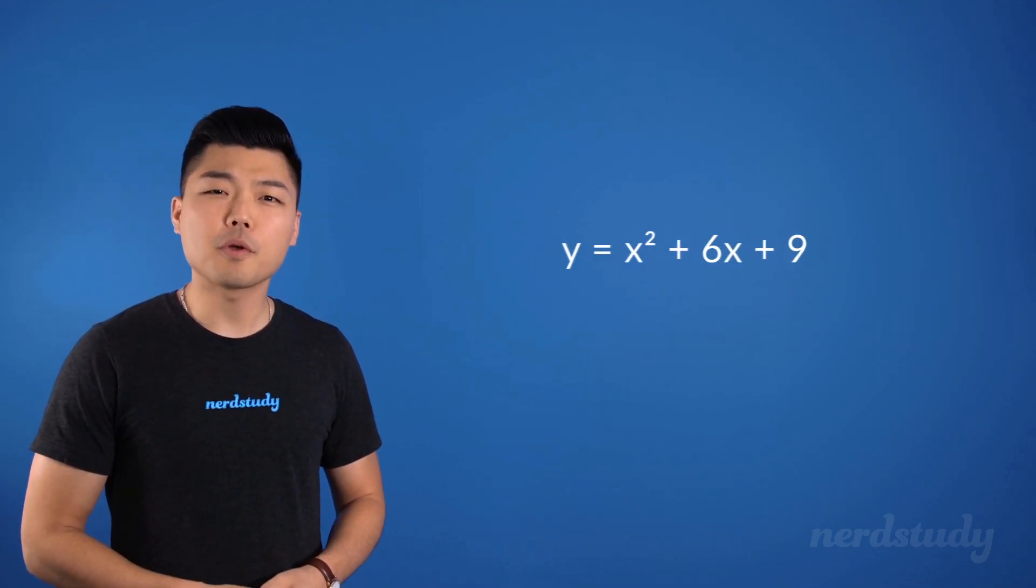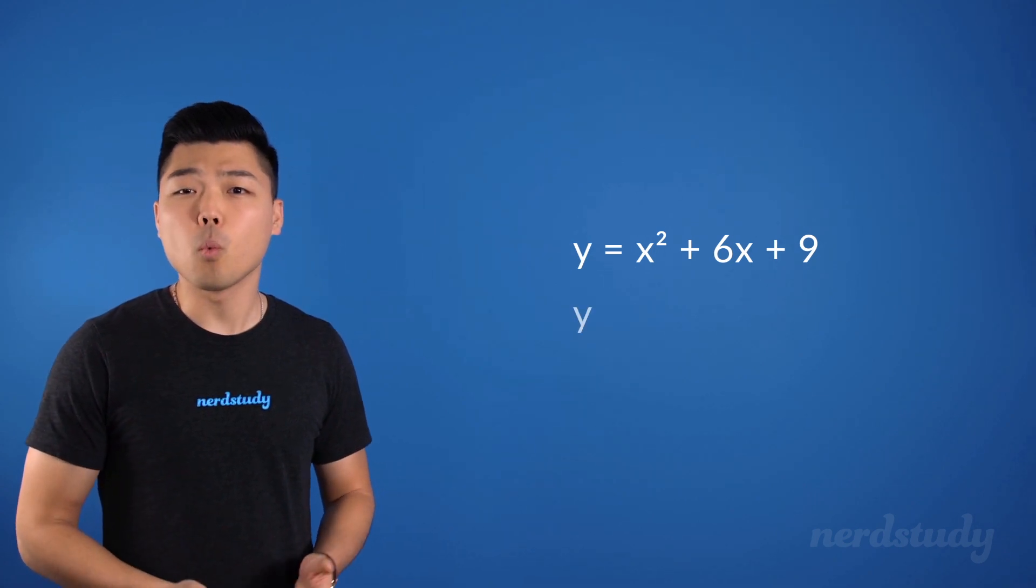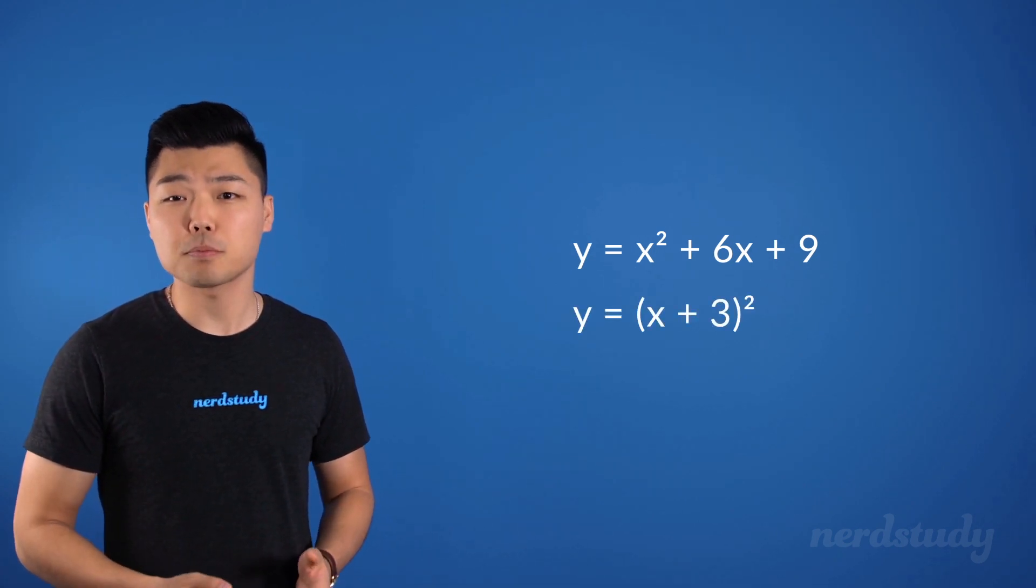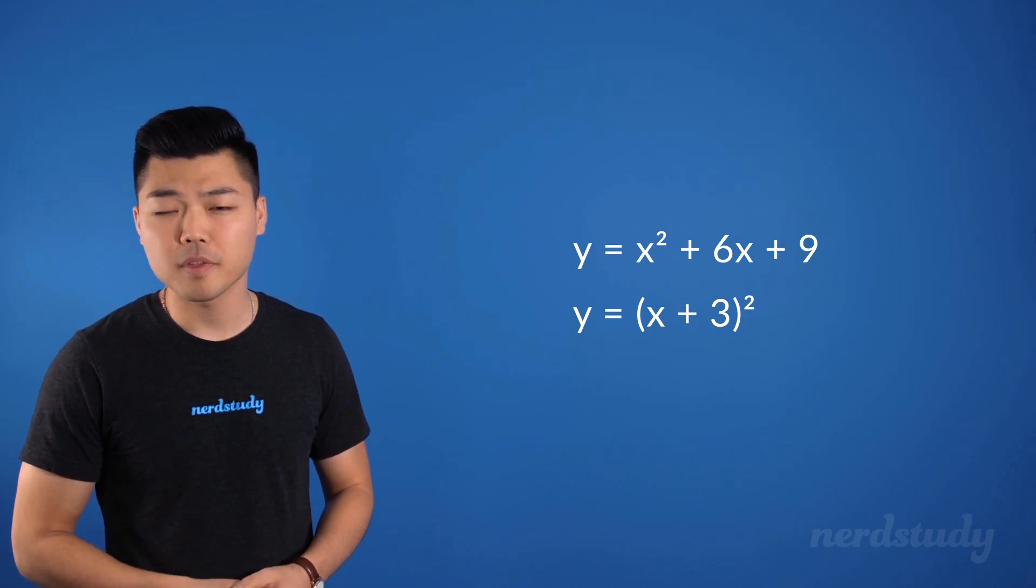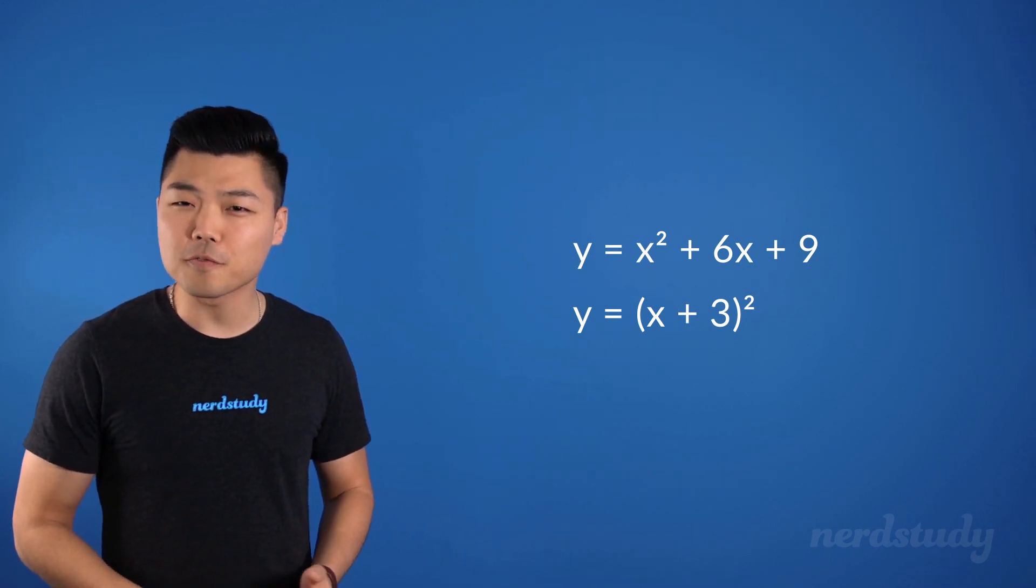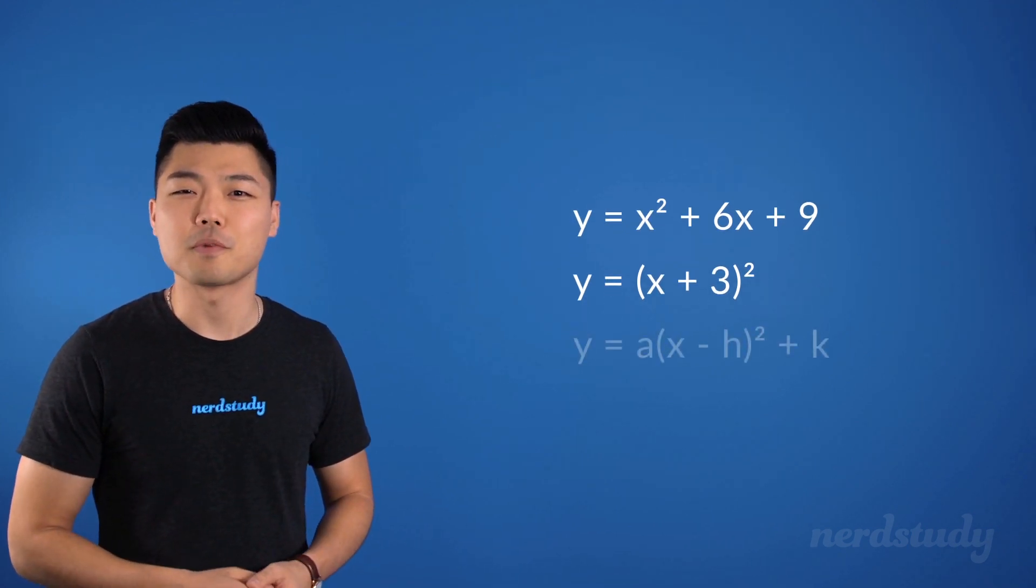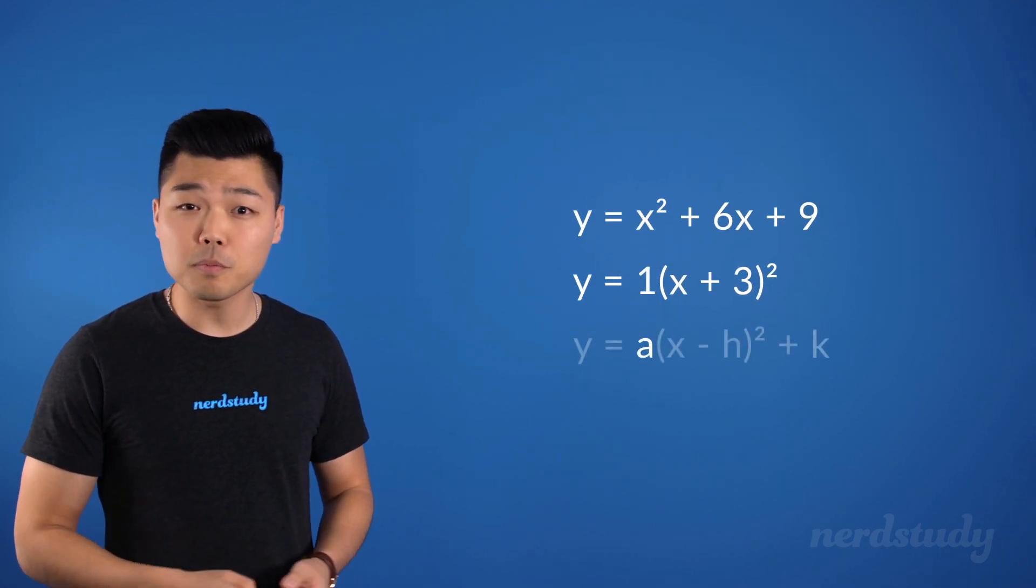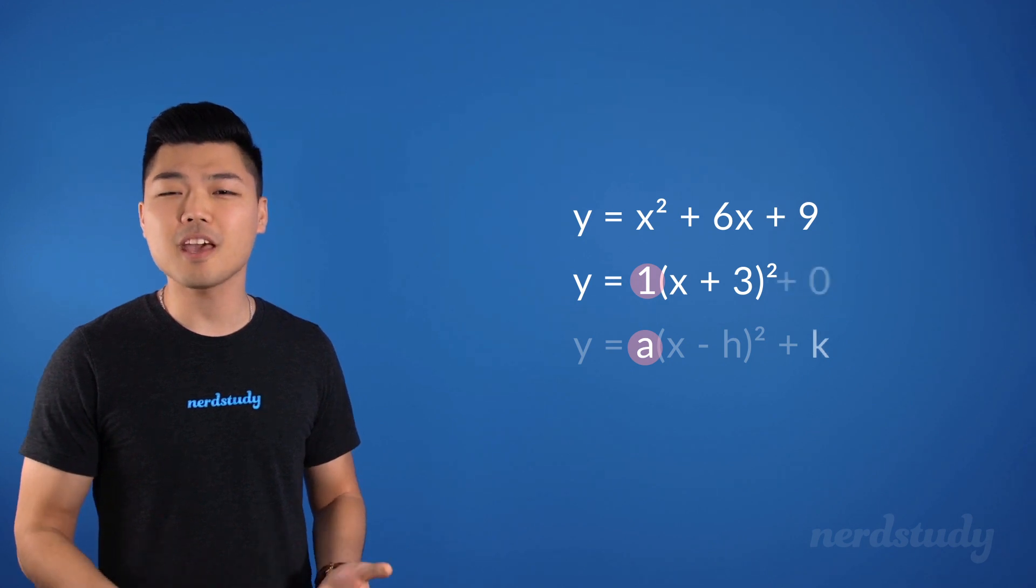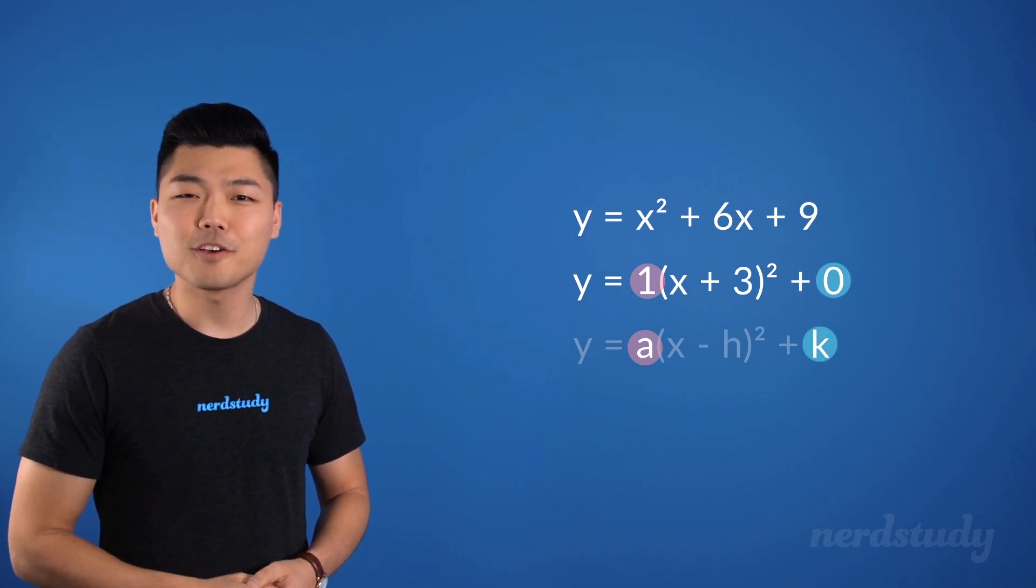Therefore, when we factor it, it would become y = (x + 3)² . If you look at this equation, you'll actually notice that we have the vertex form here. Our a would be 1 and our k would be 0.